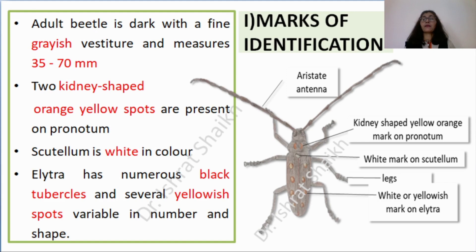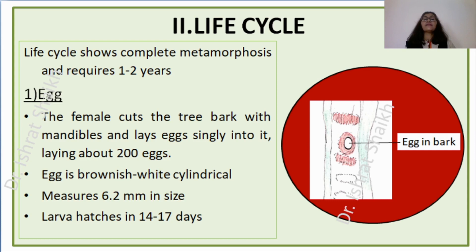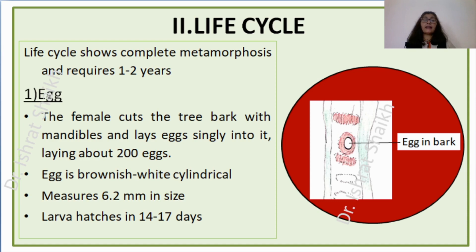The life cycle shows complete metamorphosis and requires one to two years. Complete metamorphosis means all four stages are present: egg, larva, pupa and adult. Such insects are also called holometabolous insects. The first stage is the egg stage. The female cuts the tree bark with its mandibles and lays eggs singly into it, laying about 200 eggs — one egg per hole — so there will be a number of cuts on the bark of the mango tree.